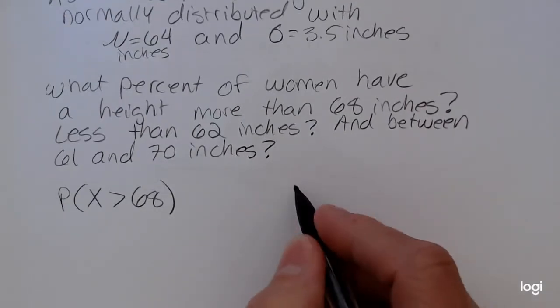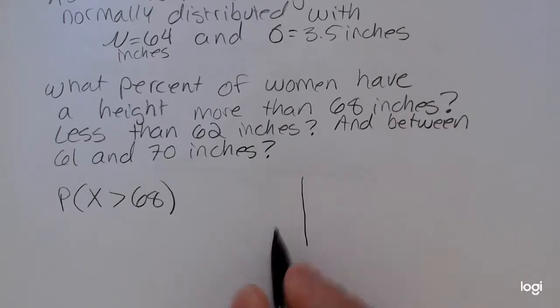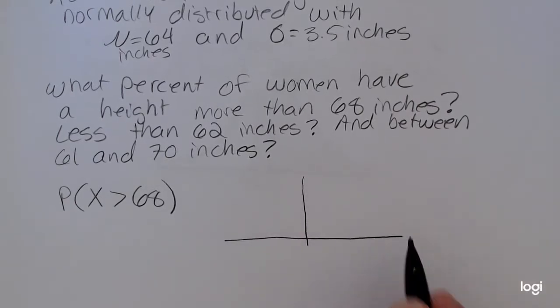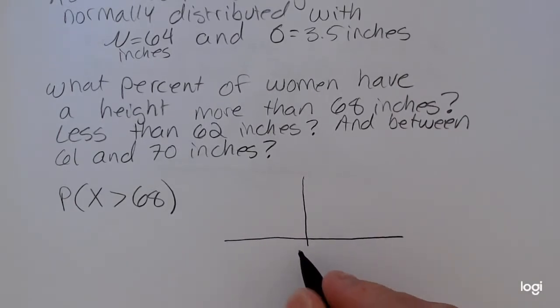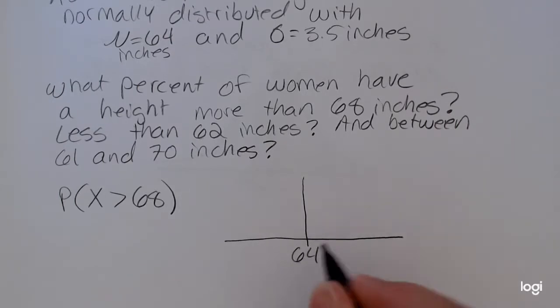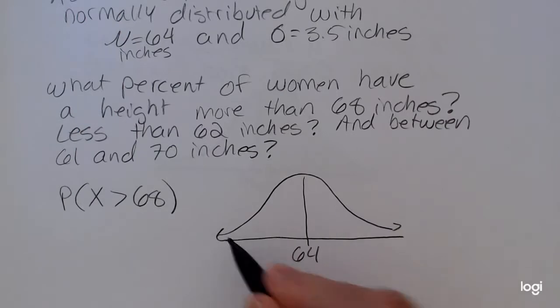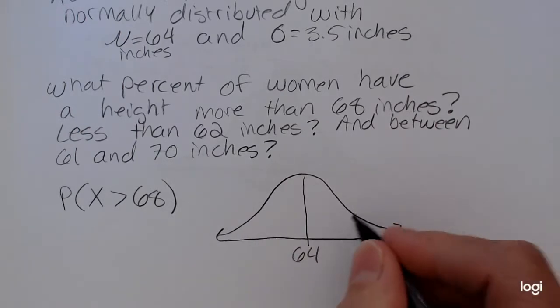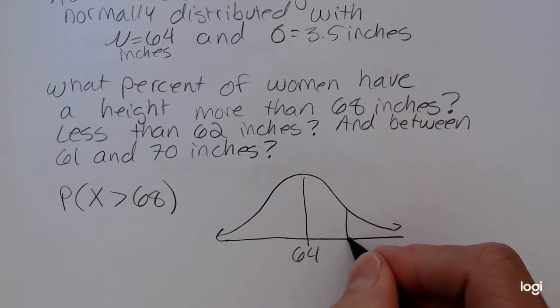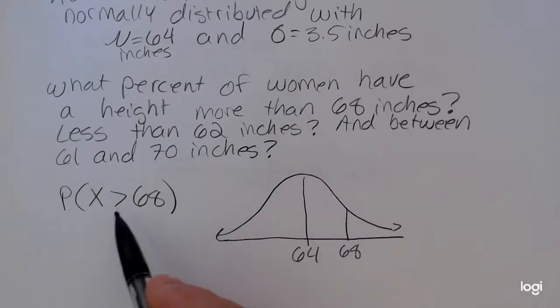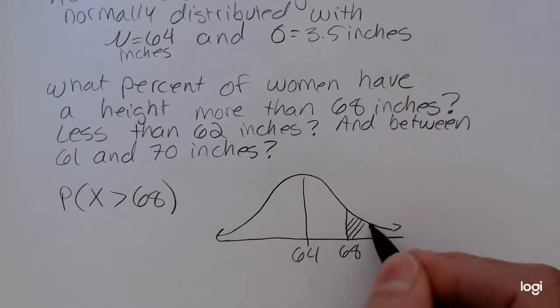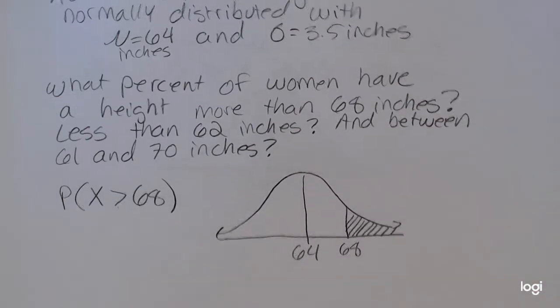It's a good habit to sketch what's given and what you're looking for. So the mean is 64, and the x value I'm given is 68, and that is above the mean. And I have a greater than case, so I want to shade to the right.